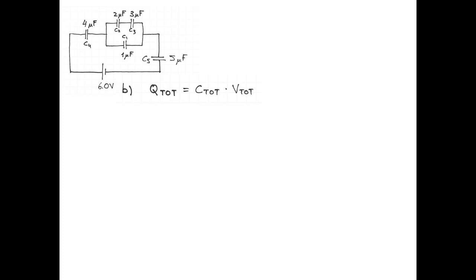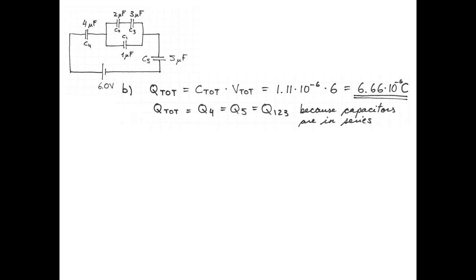Now let's figure out the charge on each capacitor and the potential difference across each. First, we find the total charge: 1.11 microfarads multiplied by 6 volts equals 6.66 microcoulombs. The 4 microfarad capacitor, the equivalent of capacitors 1, 2, and 3, and the 5 microfarad capacitor are all in series, so they all carry the same charge. The potential difference across capacitor 5 is 6.66 microcoulombs divided by 5 microfarads, which is 1.33 volts.